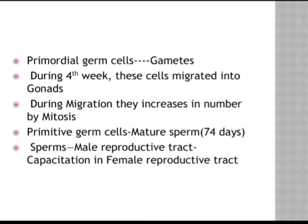In the case of the sperm mother cell or primitive sperm germ cell, mature sperm is produced within 74 days. The sperms, once formed inside the seminiferous tubules of the testis, will move through the male reproductive tract. During copulation they are discharged into the female reproductive tract through sexual intercourse, followed by capacitation — the removal of cholesterol and proteins over the acrosome of the sperm in the female reproductive tract.